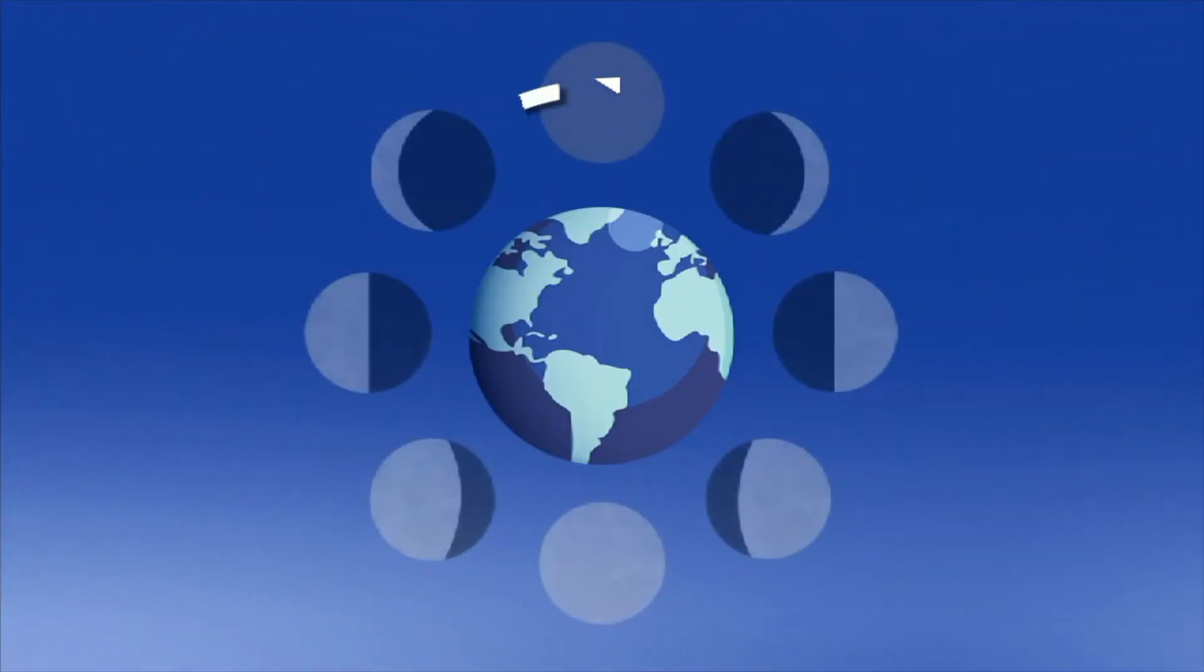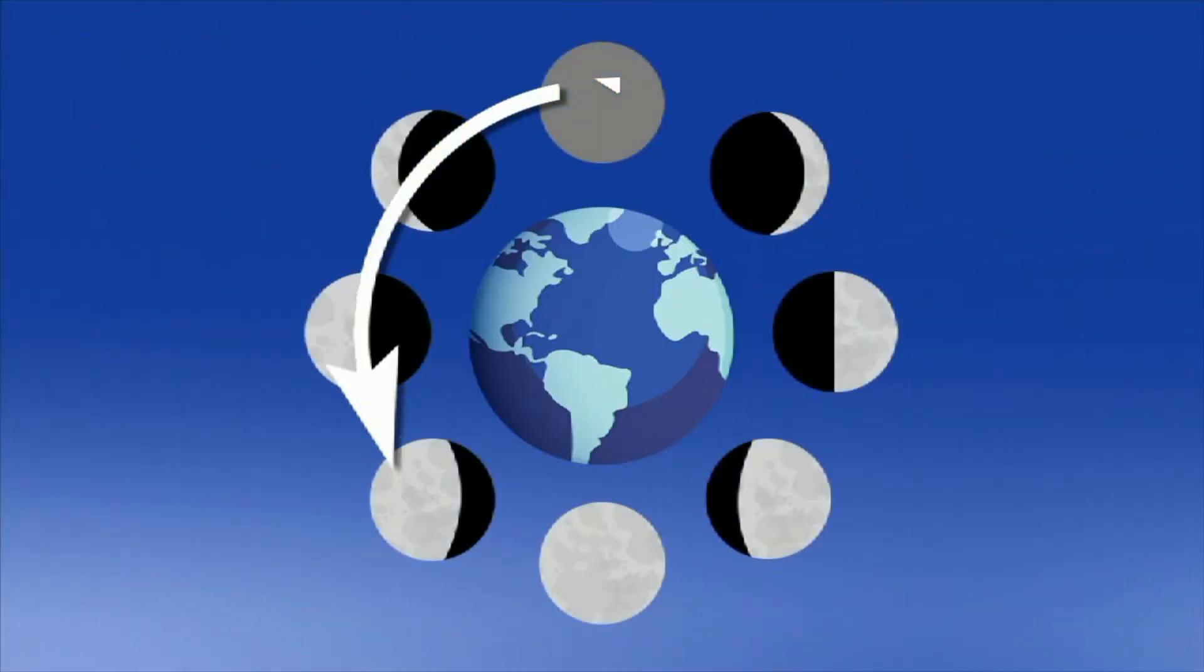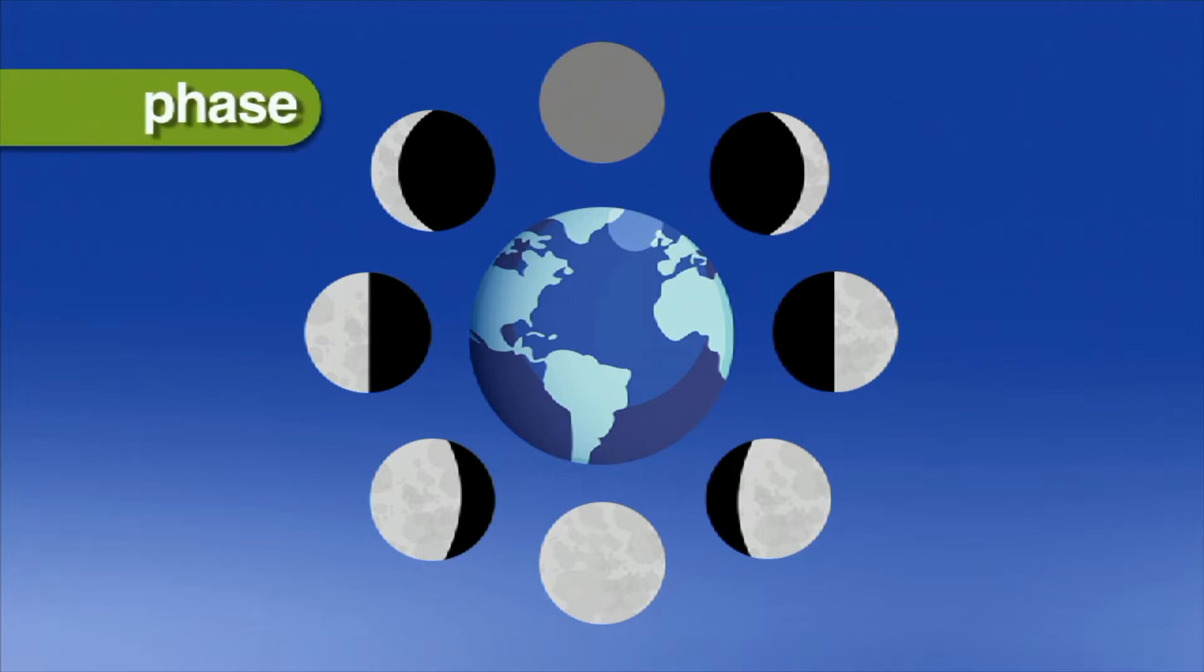As the Moon circles the Earth every 29.5 days, we see the bright parts of the Moon's surface at different angles. These are called phases of the Moon, and they appear to us as different shapes.